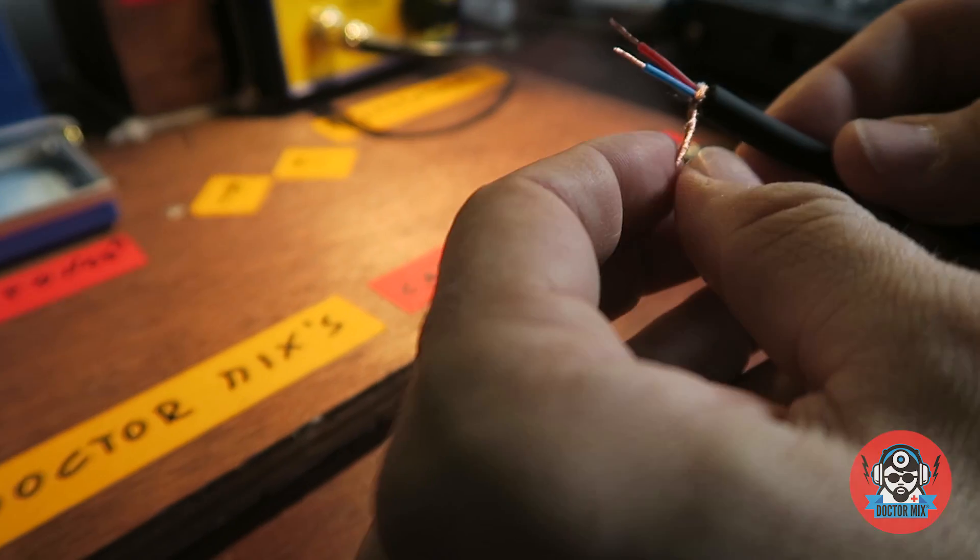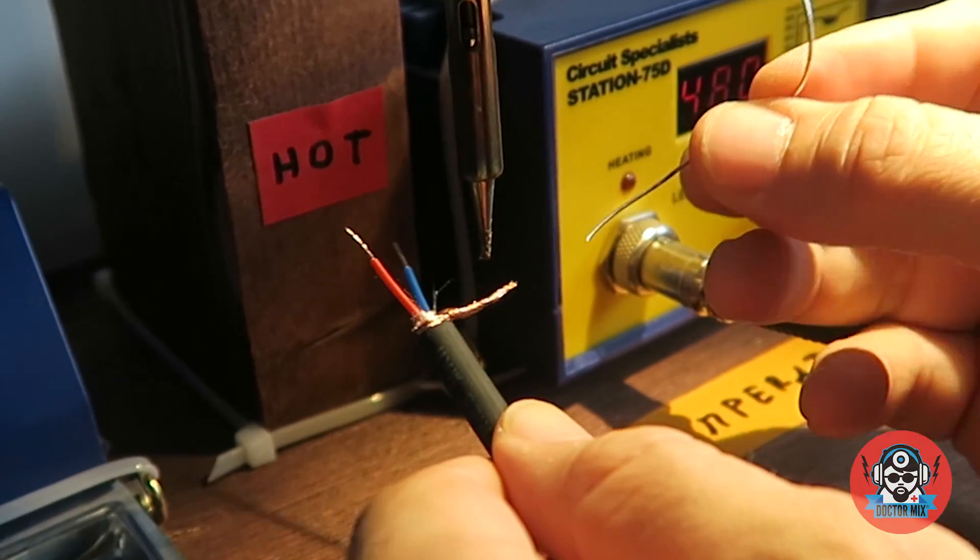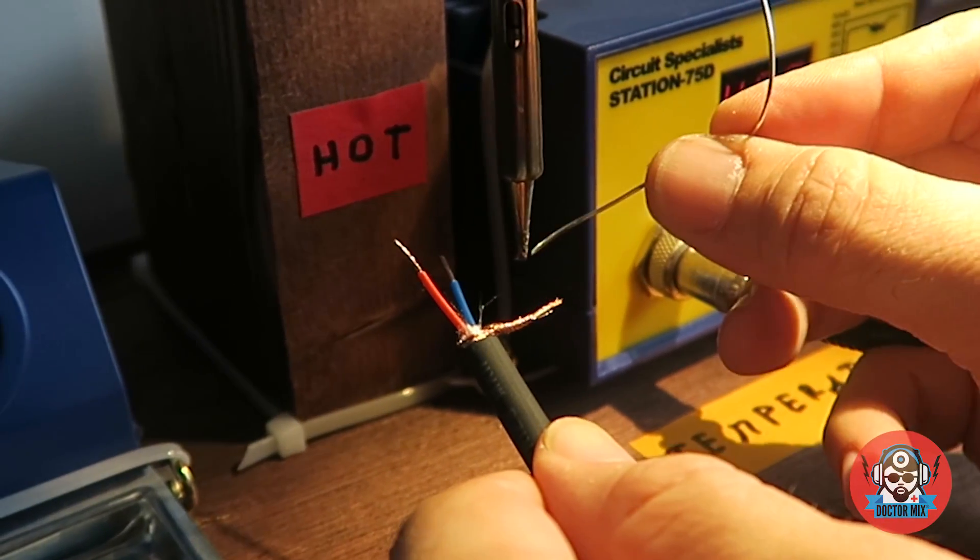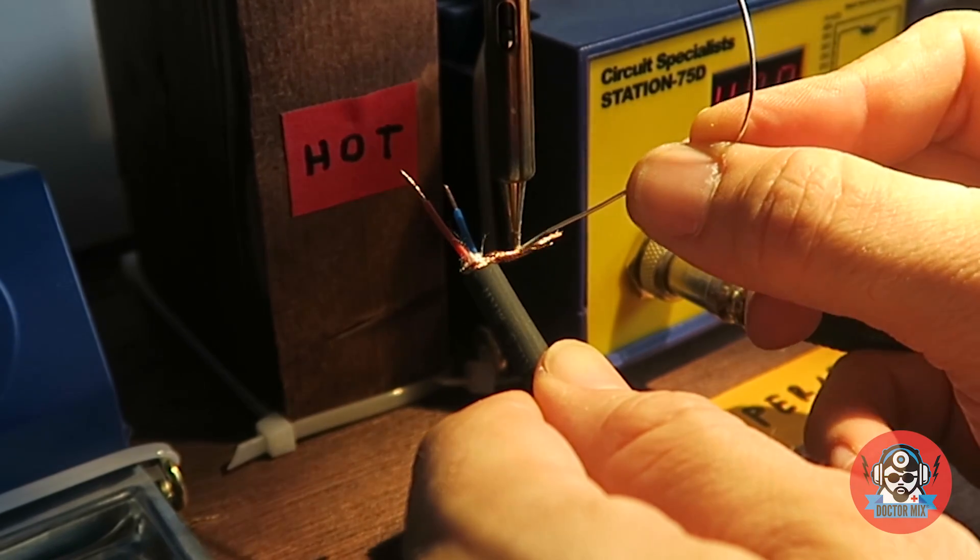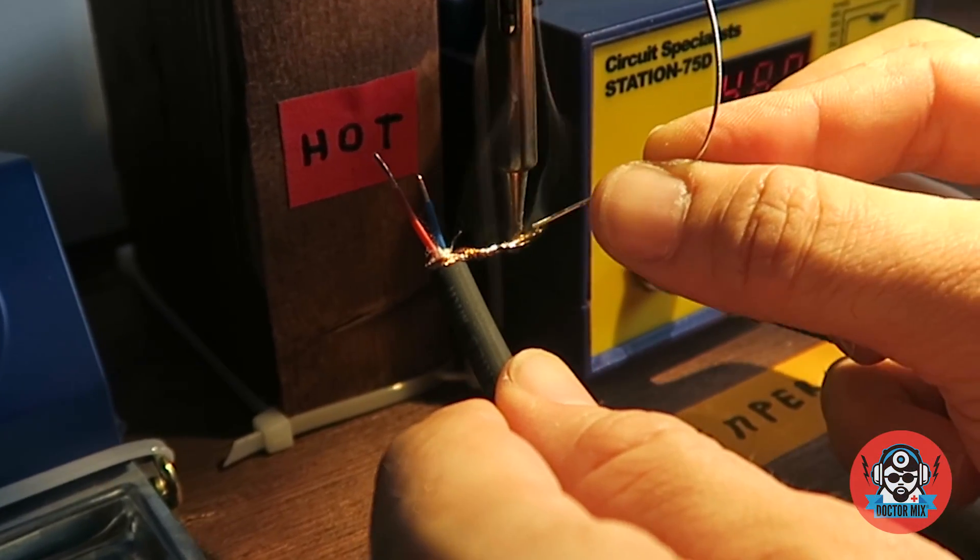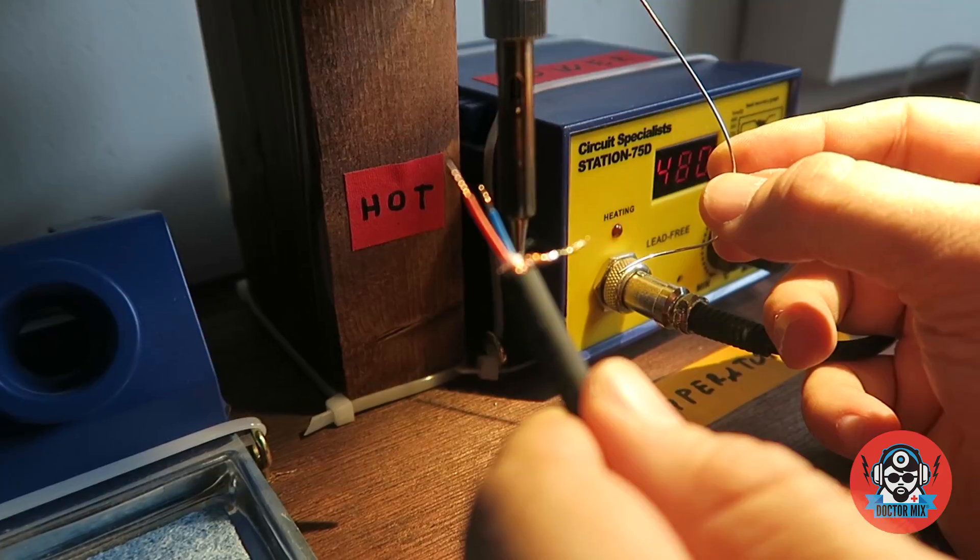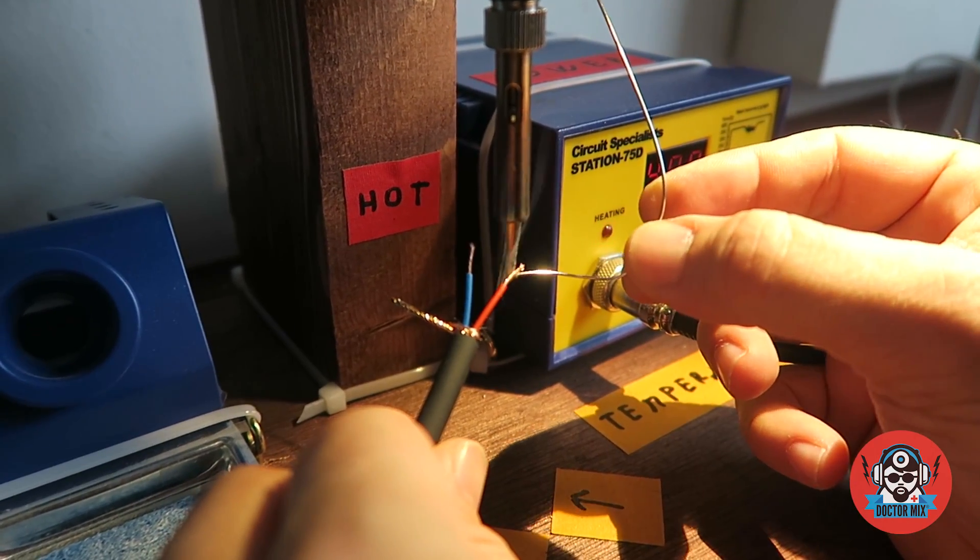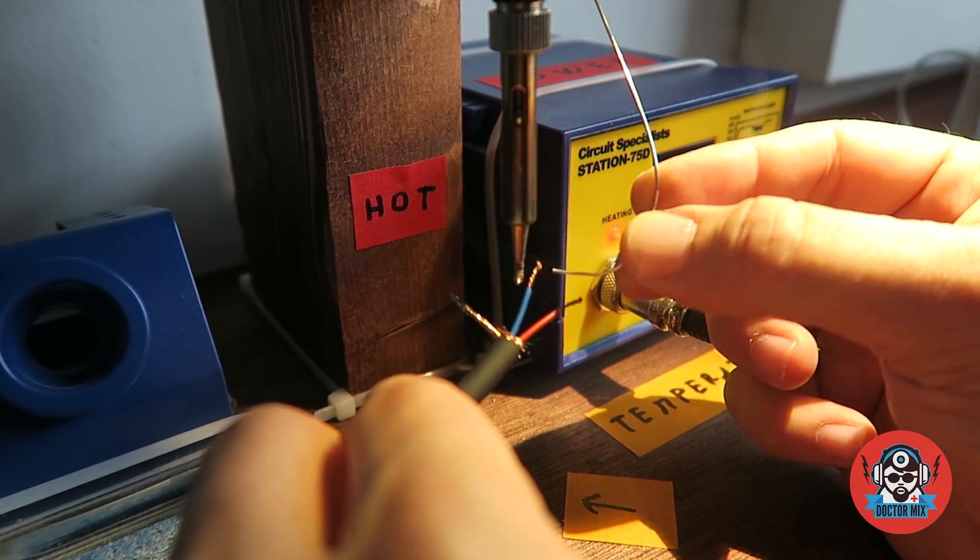Now we apply some solder. You want to be quite fast because you don't want to get this too hot. So just as fast as you can. Now we do the same to the hot and to the cold.